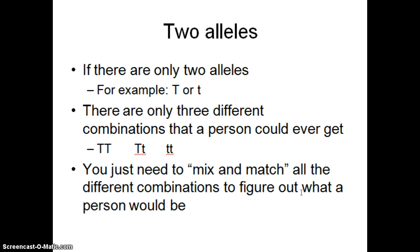So if there's just two alleles, and I'll use the example of a big T or a little t, there's only three different combinations that we can get. We can put the big T with the big T right here, two of those. Or I could put a big T with a little t. Or I could take those little t's and put them together.